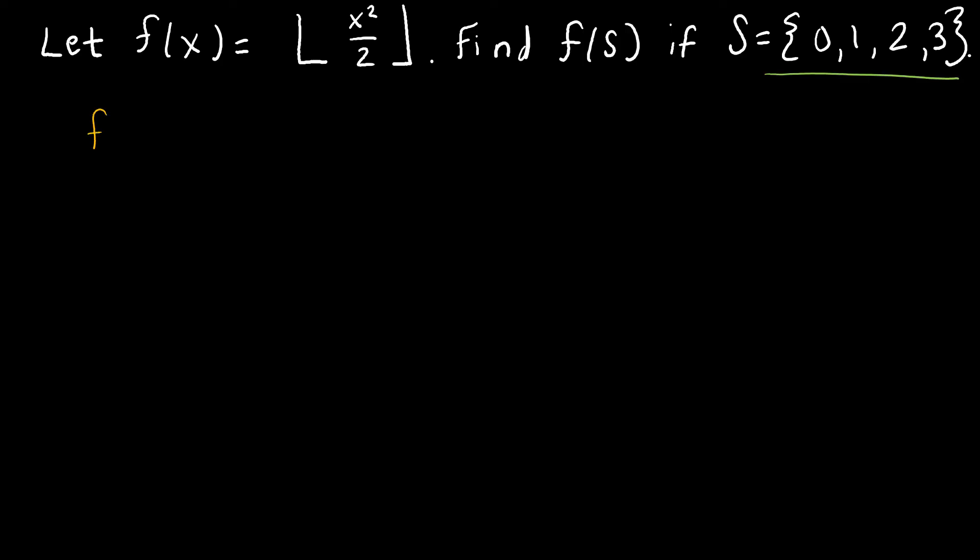So if I'm finding f of 0, that tells me 0 squared divided by 2, and the floor function of that. 0 squared is 0, divided by 2 is 0, and the floor of 0 would, of course, be 0.